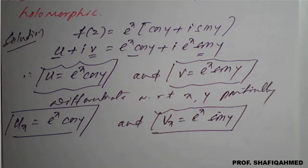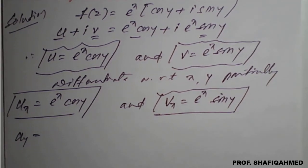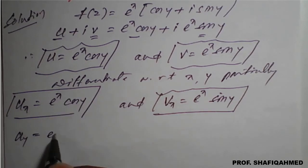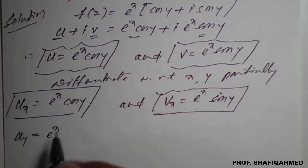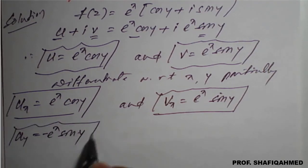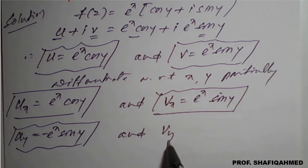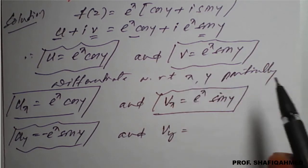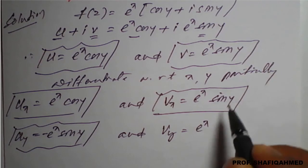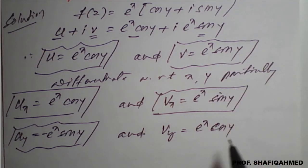Now we find u and v partially with respect to y. Therefore, u_y = e^x · (−sin y), since the partial derivative of cos y is −sin y, keeping e^x as it is. And v_y = e^x · cos y, since the partial derivative of sin y with respect to y is cos y.